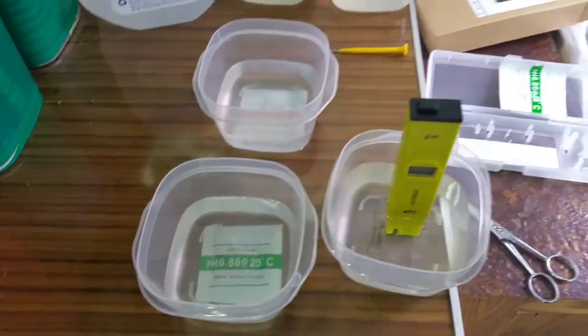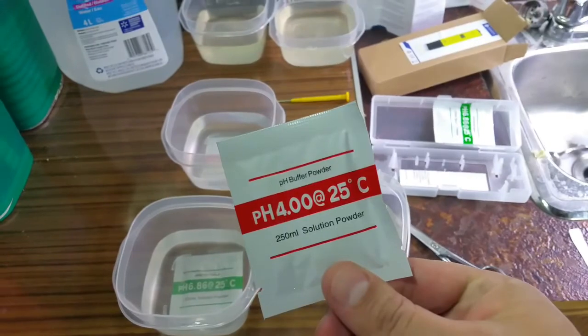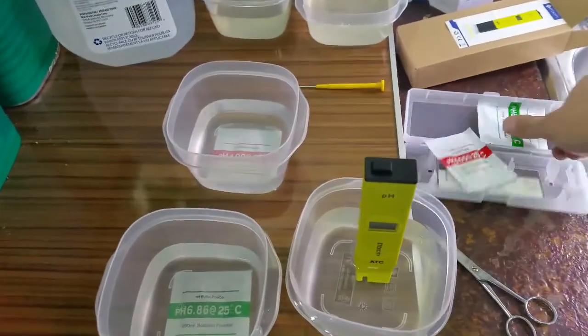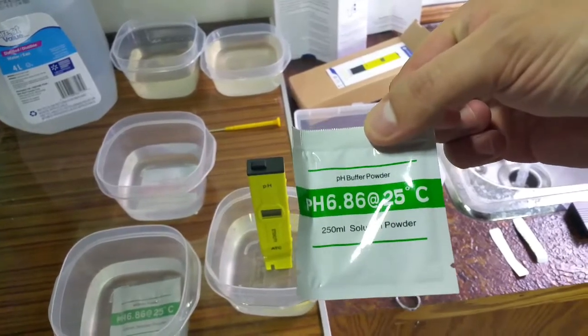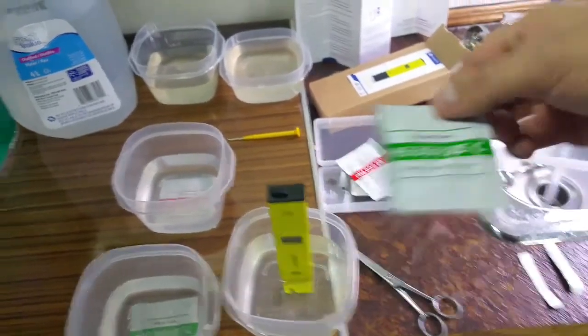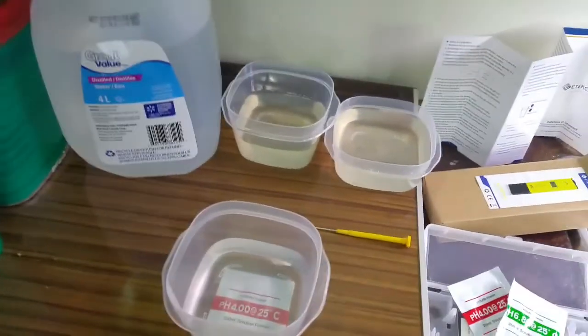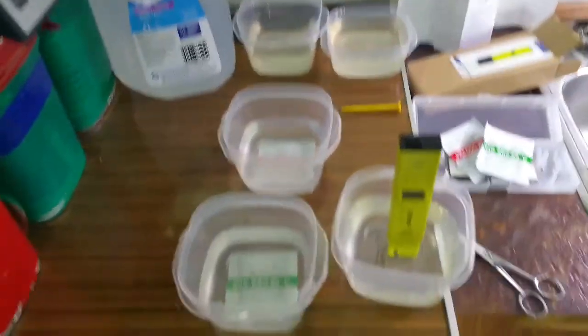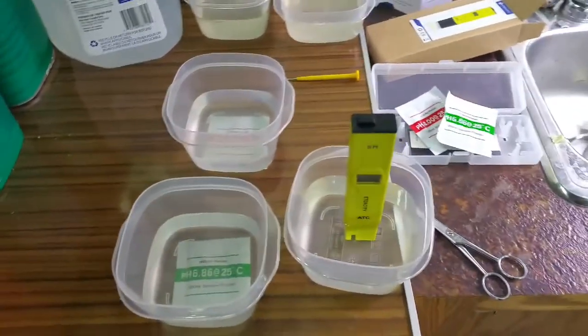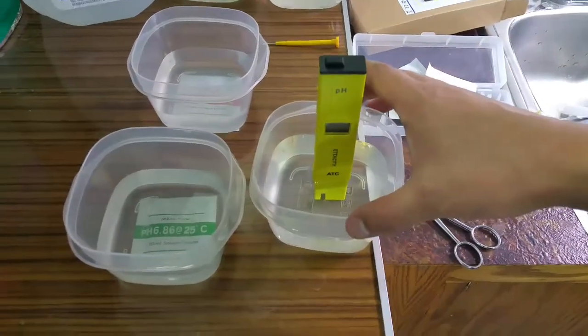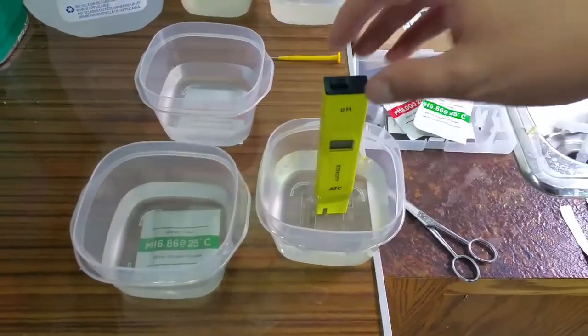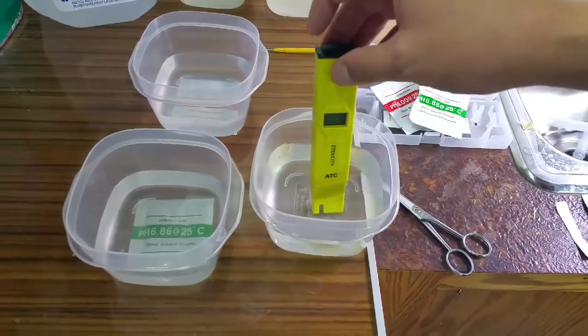They give you set pH packets you mix up with 250 milliliters of distilled water. I've got a bunch of different tubs going here. This one is just distilled water. You soak your meter for 10 minutes to start when it's brand new right out of the package.